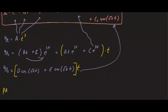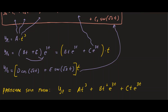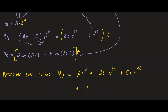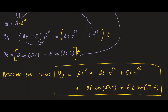The particular solution form is the sum of yp1, yp2, and yp3: yp equals A t cubed, plus (Bt squared plus Ct) e to the 3t, plus Dt cosine of square root of 2t, plus Et sine of square root of 2t. That is the form of the particular solution for this non-homogeneous differential equation.